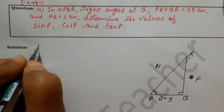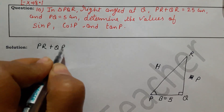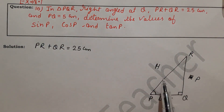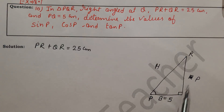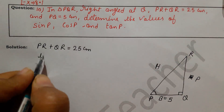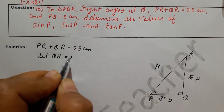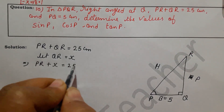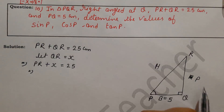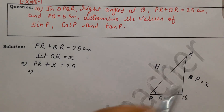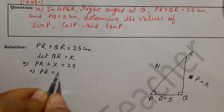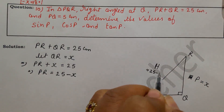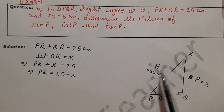We are given that PR plus QR equals 25 cm. Since the perpendicular and base will be smaller sides, let's call the perpendicular QR equal to x. So PR plus x equals 25, which implies PR equals 25 minus x.